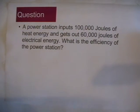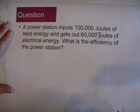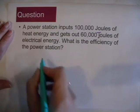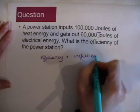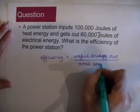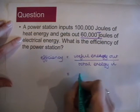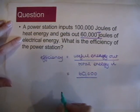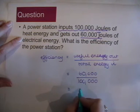Now these were straightforward examples — it's not often that information is laid out as clearly as the previous examples with diagrams. A power station inputs 100,000 joules of heat energy and outputs 60,000 joules of electrical energy. What is the efficiency of the power station? Always start by writing the equation in every exam question. Efficiency = useful energy out over total energy in = 60,000 joules divided by 100,000 joules, which gives an efficiency of 0.6.